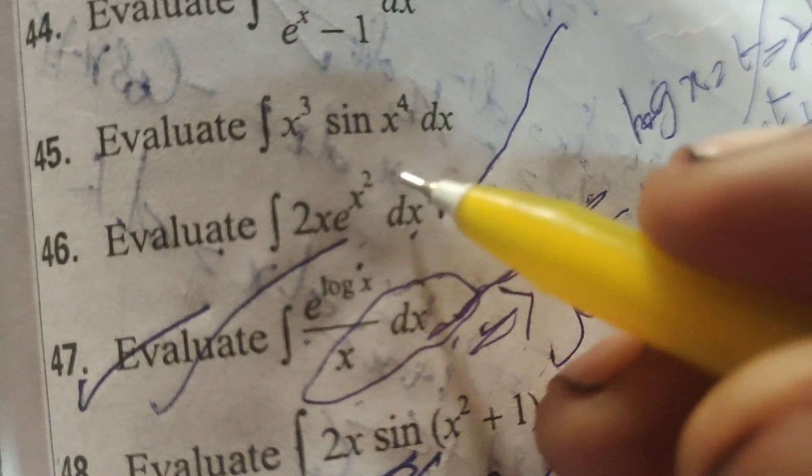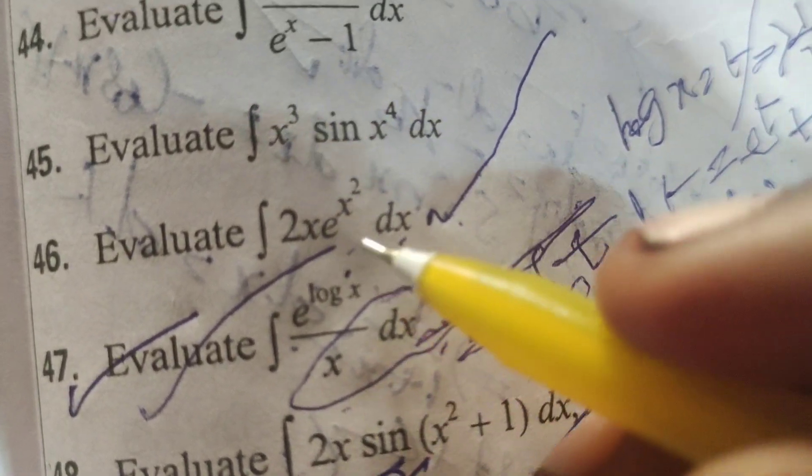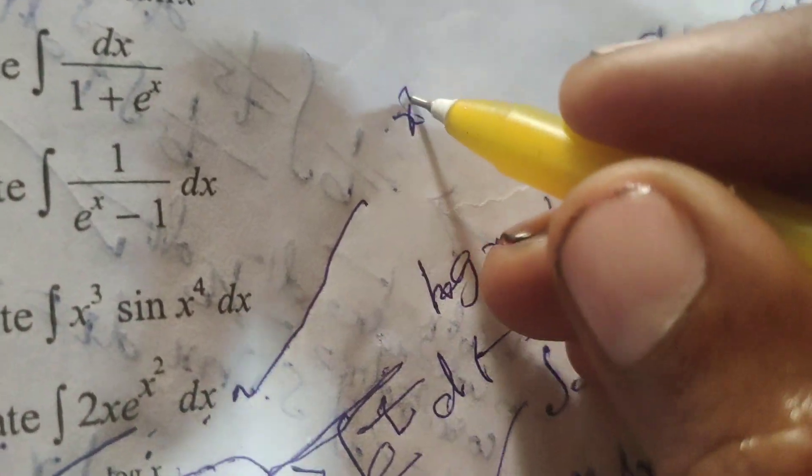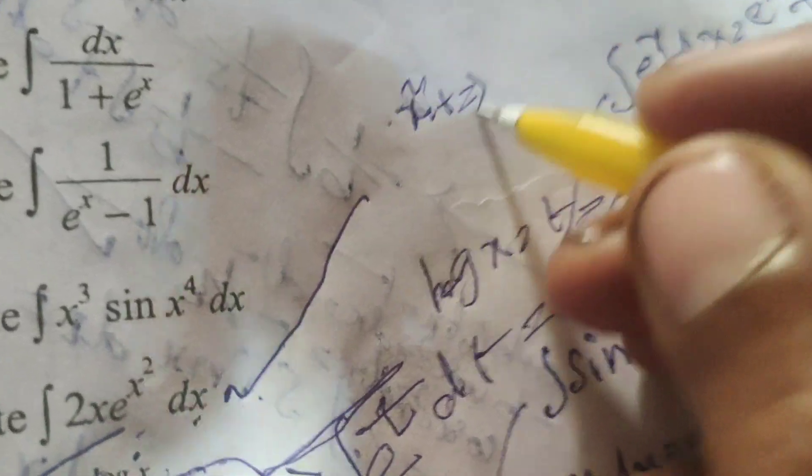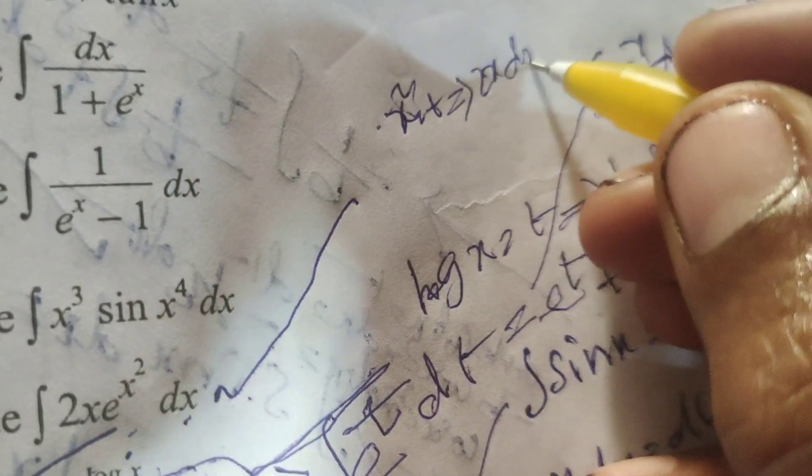Integral of 2x e^(x²) dx. Here, put x² equals t. Then differentiate: 2x dx equals dt.